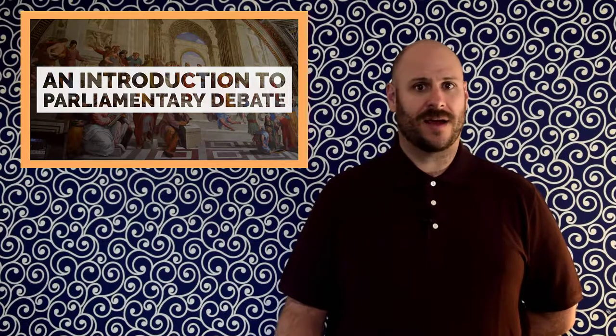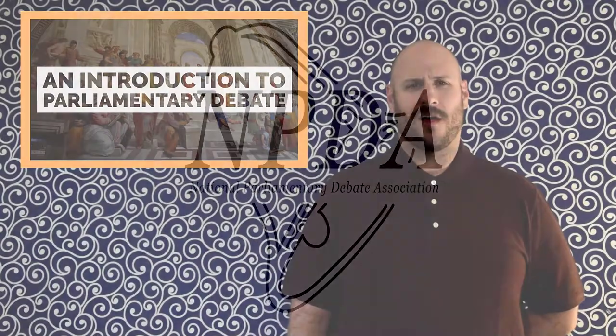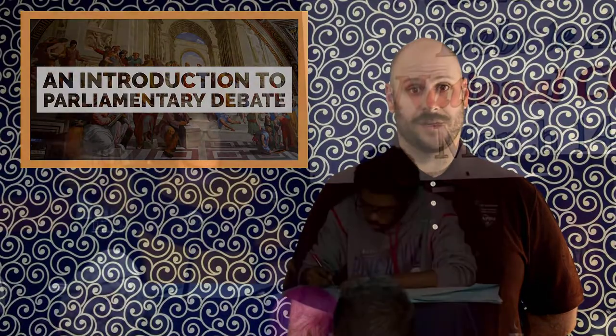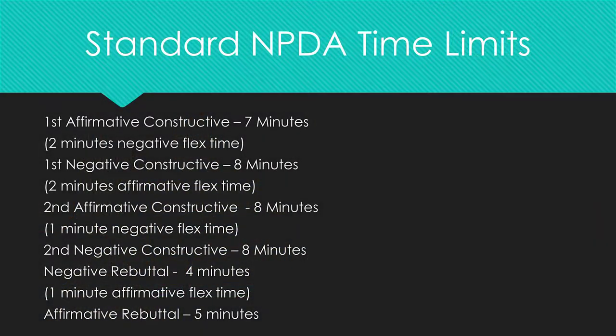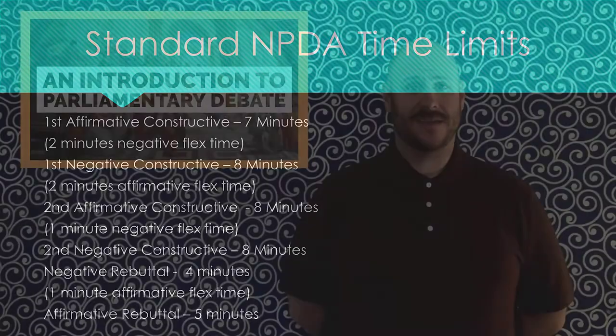The time limits for parliamentary debate are designed to give even time to both teams. In intercollegiate competition, the time limits are standardized in the bylaws of the National Parliamentary Debate Association. Should you watch or participate in a full-length NPDA-style round, you can expect the following structure: First affirmative constructive — 7 minutes; 2-minute negative flex time; First negative constructive — 8 minutes; 2-minute affirmative flex time; Second affirmative constructive — 8 minutes; 1-minute negative flex time; Second negative constructive — 8 minutes; Negative rebuttal — 4 minutes; 1-minute affirmative flex time; Affirmative rebuttal — 5 minutes. These times establish a round of approximately 50 minutes.